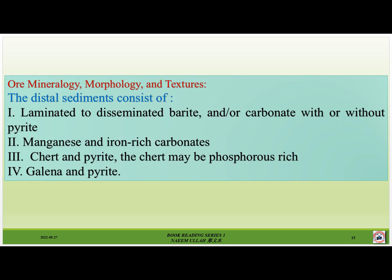The distal hydrothermal sediments consist of: number one, laminated to disseminated barite and/or carbonate with or without pyrite; number two, manganese- and iron-rich carbonates; number three, chert and pyrite — the chert may be phosphorus-rich; number four, galena and pyrite.